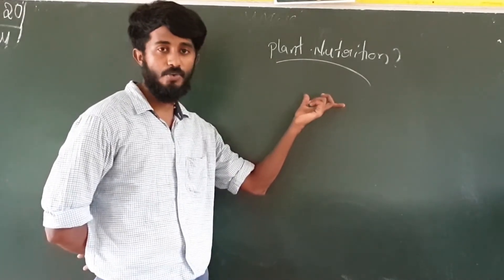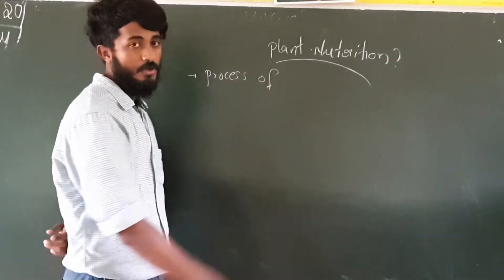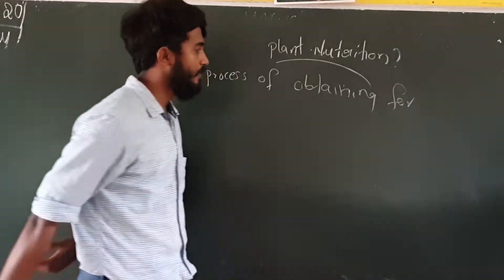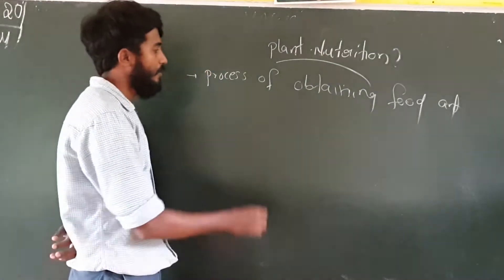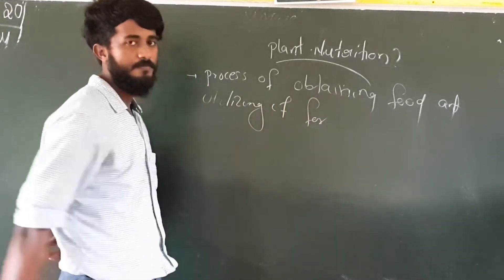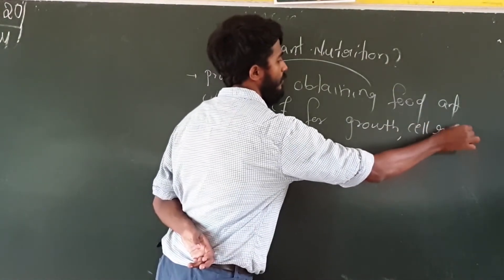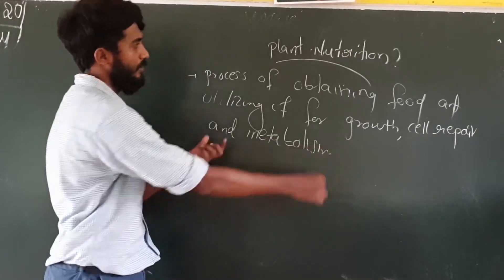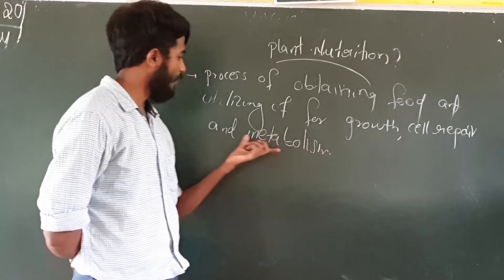So what do you mean by plant nutrition? Plant nutrition means the process of obtaining food and utilizing it for growth, cell repair, and metabolism. Students, this is the definition for plant nutrition: the process of obtaining food and utilizing it for growth, cell repair, and metabolism.